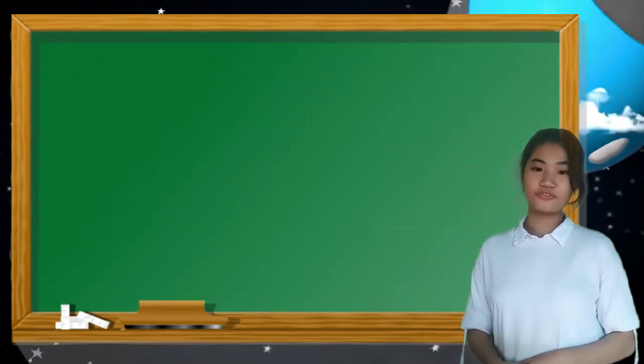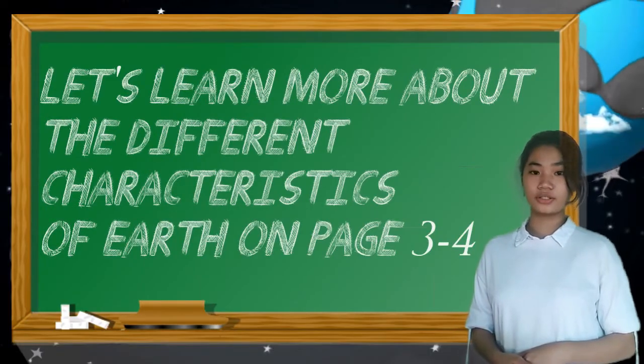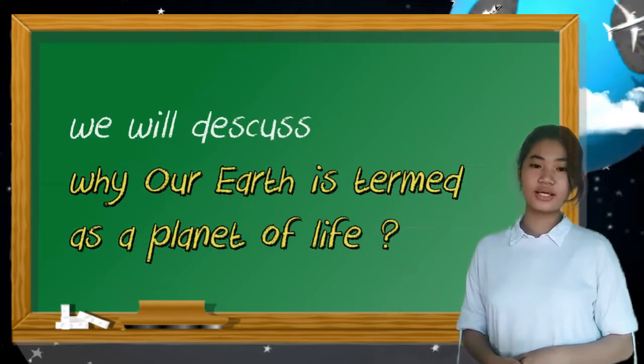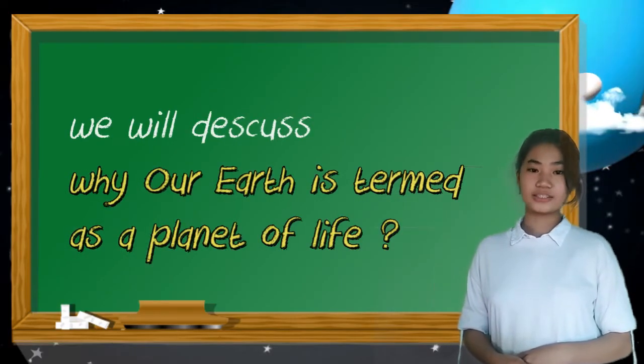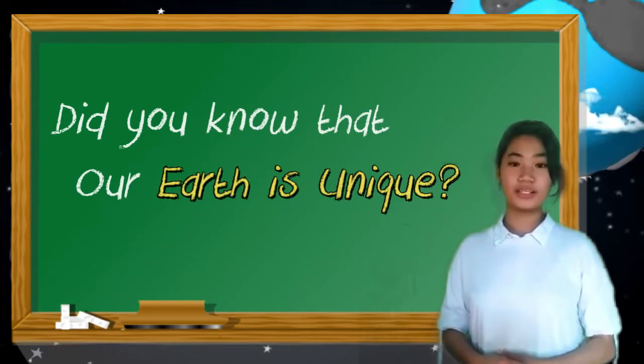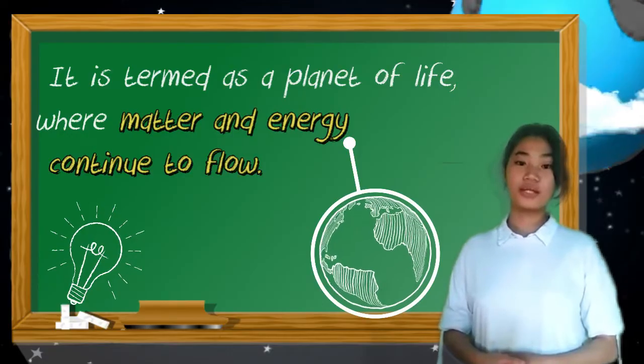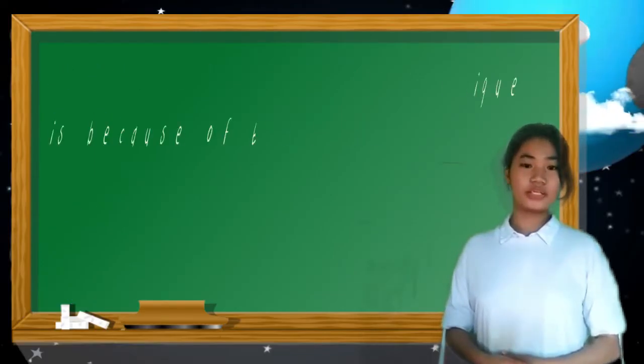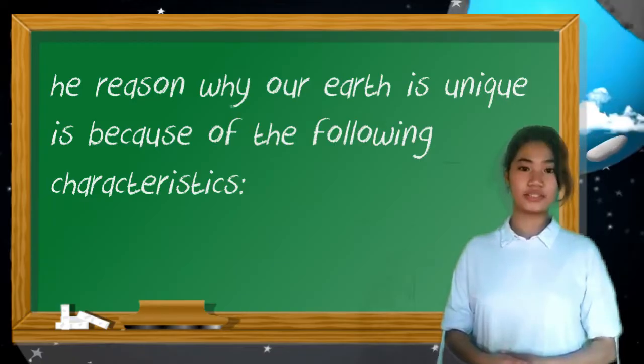Now that you are done with your first task, let's learn more about the different characteristics of Earth on page 3 to 4. In this part of the lesson, we will discuss why our planet is termed as planet of life. Did you know that our planet Earth is unique? It is termed as the planet of life where matter and energy continue to flow.